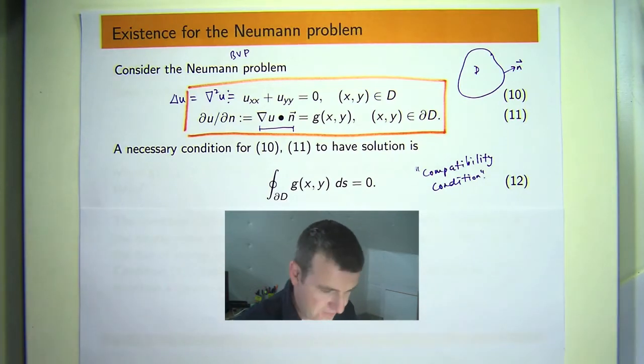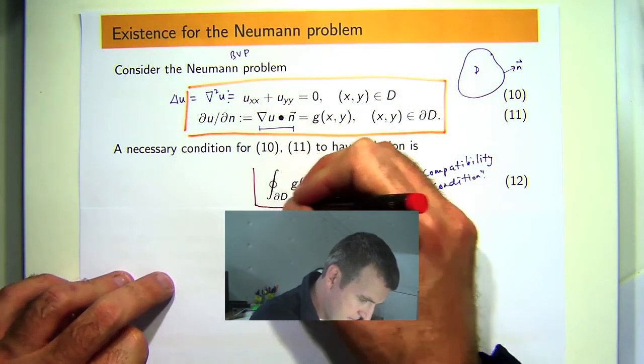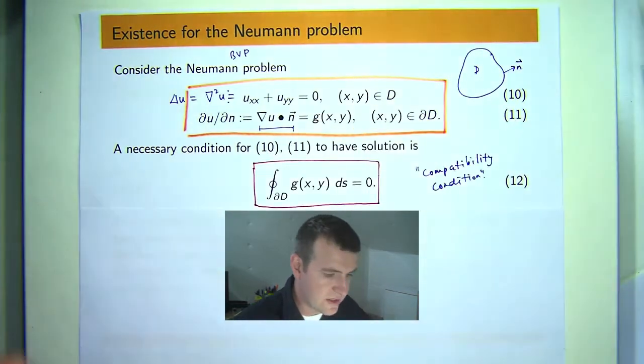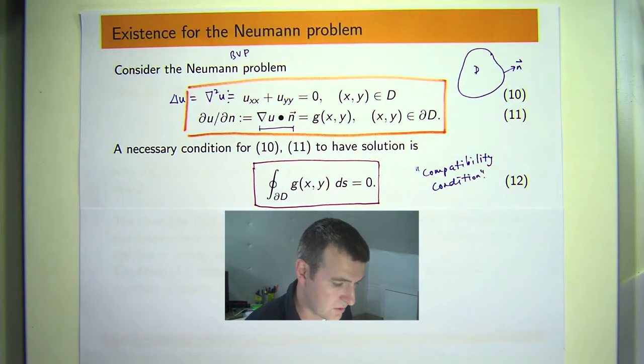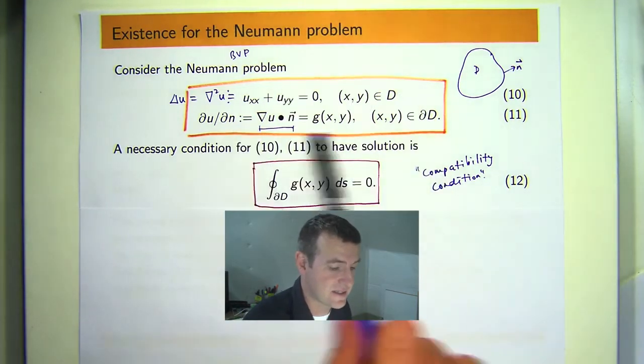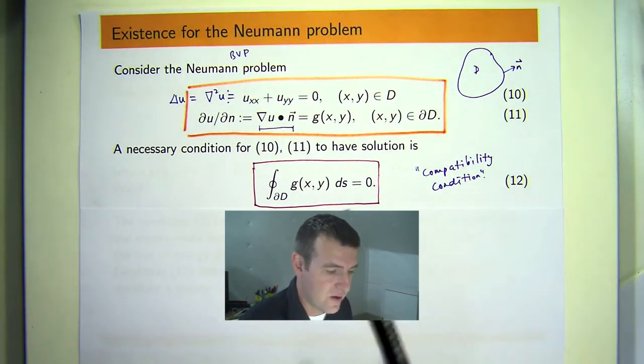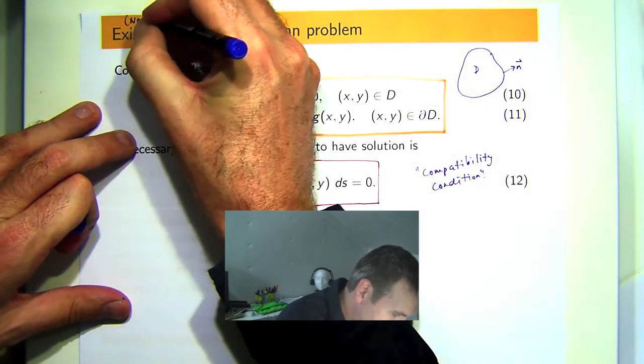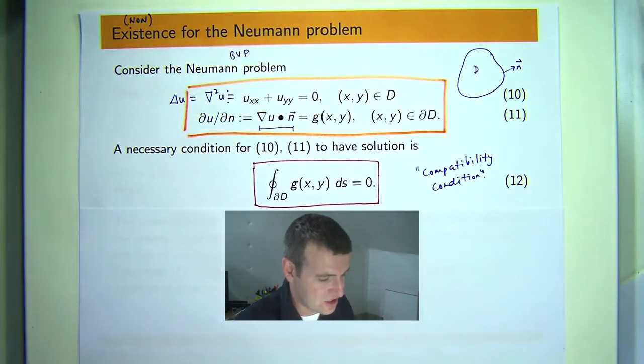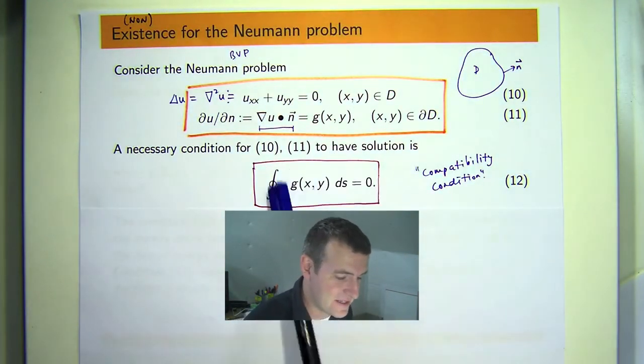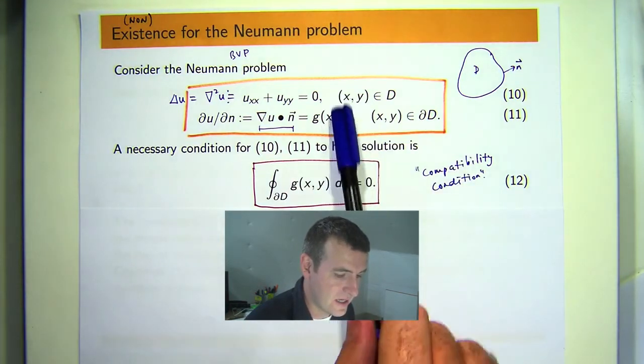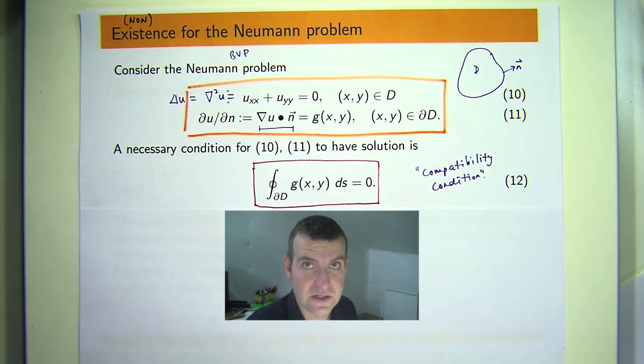Just before we actually prove it, let's look at some of the limitations of the actual result. If this is zero it tells you nothing about whether or not a solution actually exists to the original problem. When I say existence of solutions for the Neumann problem, the only really useful thing for this theorem is to show non-existence. So if this doesn't hold then the problem 10-11 cannot have a solution. But if this does hold, we don't know - this problem might or might not have a solution. We have to dig a bit deeper.